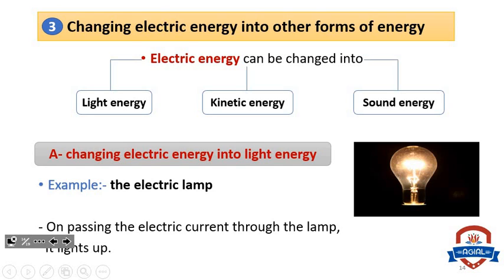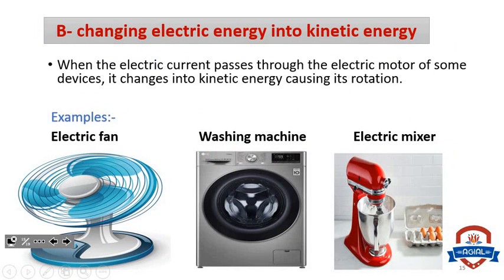For example, in the electric lamp. On passing the electric current through the lamp, it lights up. Why? Because the electric energy in the lamp changes into light energy. Number two: changing electric energy into kinetic energy. When the electric current passes through the electric motor or some devices, it changes into kinetic energy, causing its rotation.